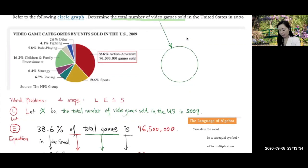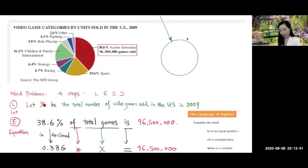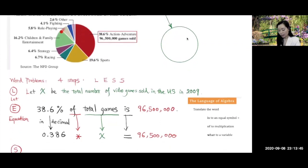Now the second step is E for equation. We're trying to get an equation that involves this X. Take a look at this problem and see how to get an equation. The information given is this 38.6 percent of the total game is going to be this number. Out of the total, 38.6 percent will be action-adventures, and that number is 96,500,000.